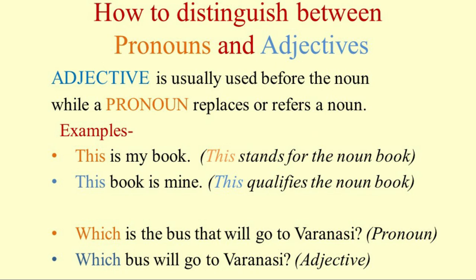Thus, as you see, we should never say that a word is a noun, an adjective, a pronoun, a verb, etc. It may be used as a noun in one sentence and as an adjective in another and yet as a pronoun in another. The class or the part of speech to which a word belongs depends upon its placement in the sentence and thus upon the work it does in that particular sentence.